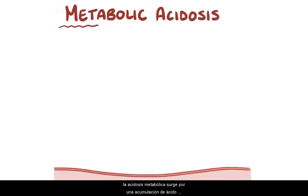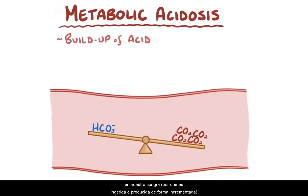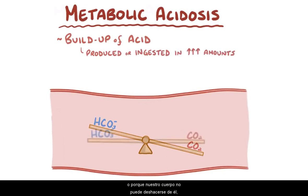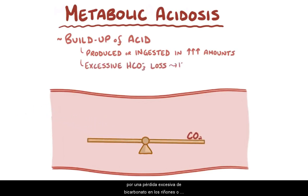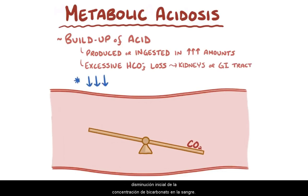Metabolic acidosis arises either from a buildup of acid in our blood — which could be because it is produced or ingested in increased amounts, or because the body can't get rid of it — or from excessive bicarbonate loss from the kidneys or gastrointestinal tract. The main problem with all of this is that they lead to a primary decrease in the concentration of bicarbonate in the blood.